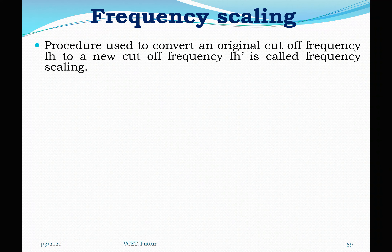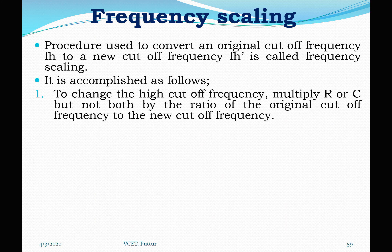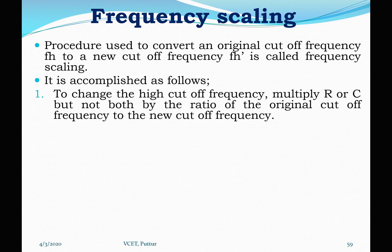As I said, if the cutoff frequency of a low pass filter is 1 kHz and I have to change it to 1.5 kHz, the procedure used to change this 1 kHz to 1.5 kHz is called frequency scaling. This can be accomplished as follows. The first step is to change the high cutoff frequency by multiplying the resistor value or the capacitor value, but not both, by the ratio of original cutoff frequency to the new cutoff frequency. We need to find that ratio and multiply either with a resistor or with a capacitor value, but not both.